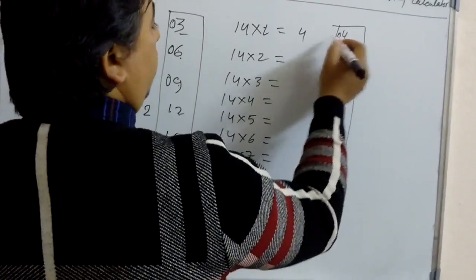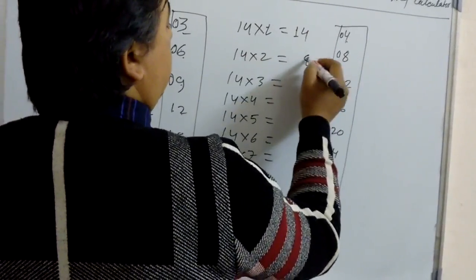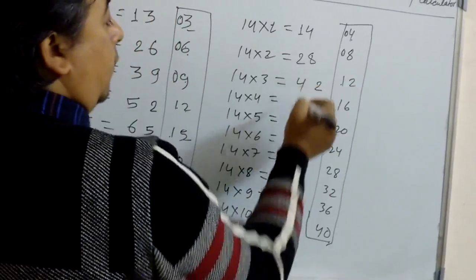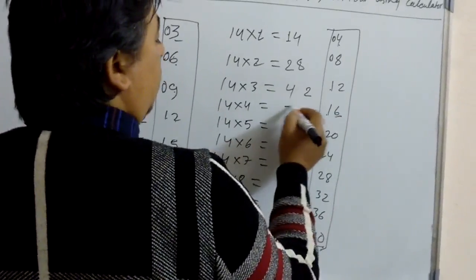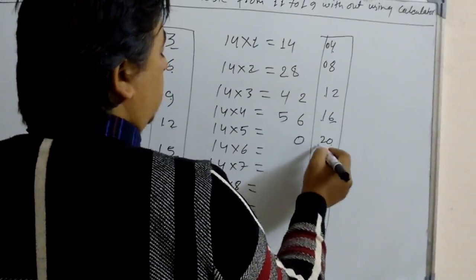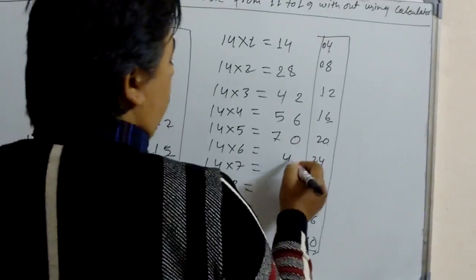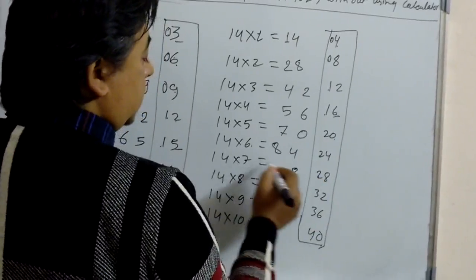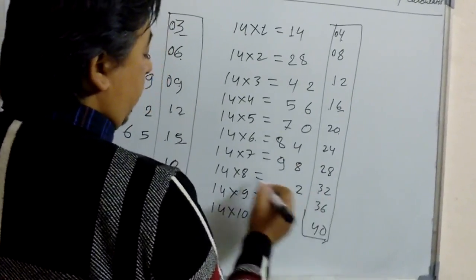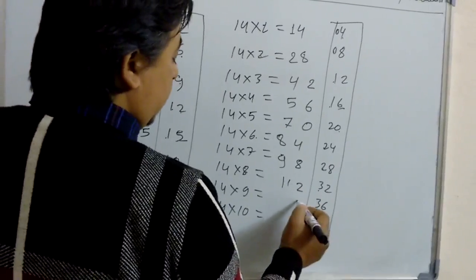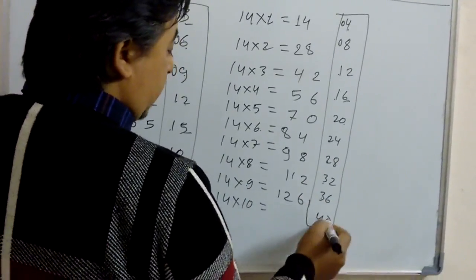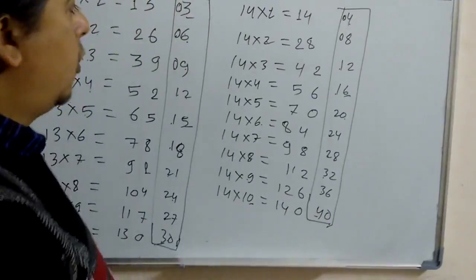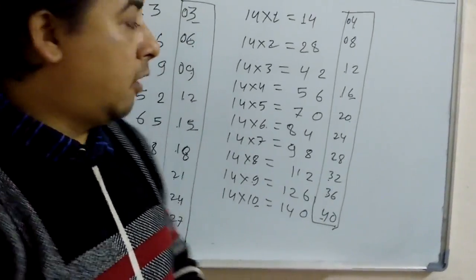Last digit same — 4. 0 plus 1 is 1. Last digit 8, 0 plus 2 is 2. Last digit 2, 1 plus 3 is 4. Last digit 6, 1 plus 4 is 5. Last digit 0, 2 plus 5 is 7. Last digit 4, 2 plus 6 is 8. Last digit 8, 2 plus 7 is 9. Last digit 2, 3 plus 8 is 11. Last digit 6, 3 plus 9 is 12. Last digit 0, 4 plus 10 is 14. In this way we can learn the multiplication table of 14.